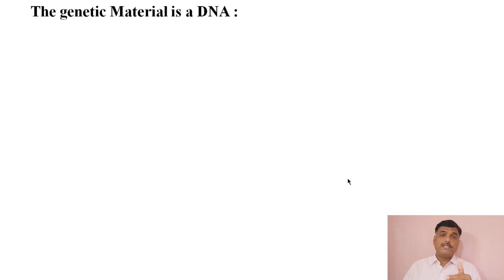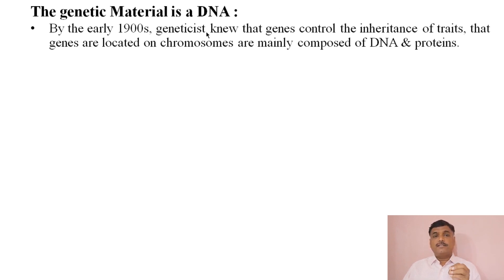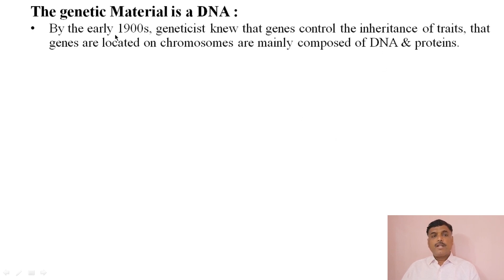After a number of experiments carried out on inheritance patterns, scientists confirmed that the genetic material is DNA. By the early 1900s, geneticists knew that genes control the inheritance of traits, that genes are located on chromosomes, and that chromosomes are mainly composed of DNA and proteins.